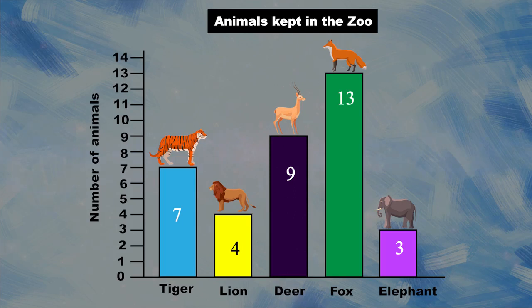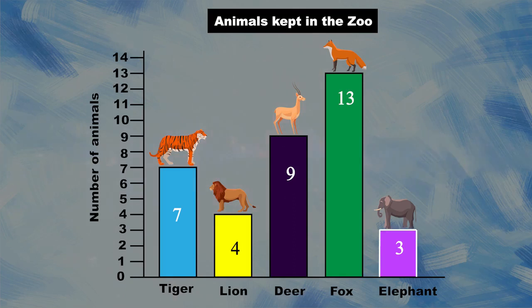And the last question: which animal is least in number? Just see the shortest bar and you will find out that it is the elephant bar — only three elephants. Understood? I know you all easily learned about bar graph. In our next video we will learn a new lesson.